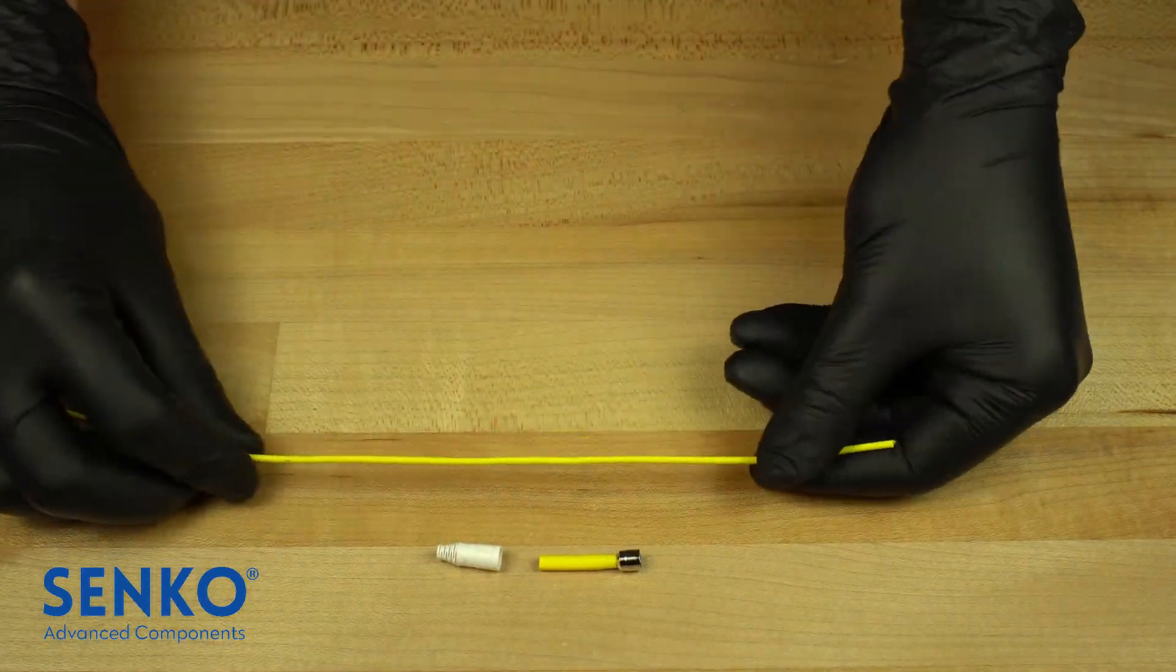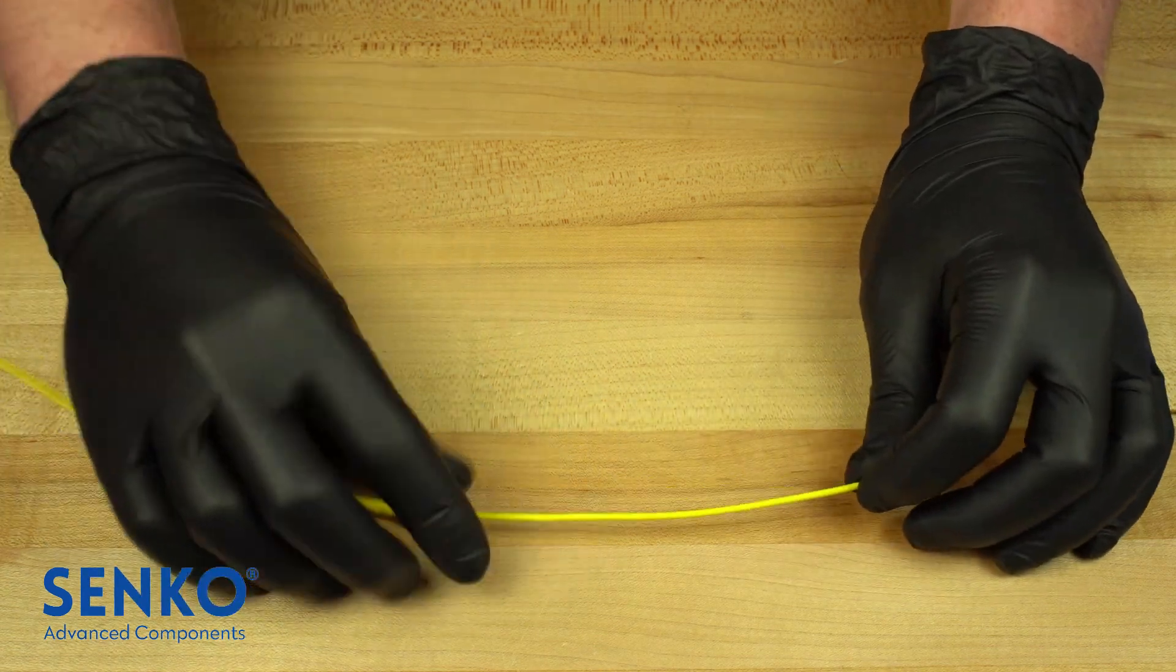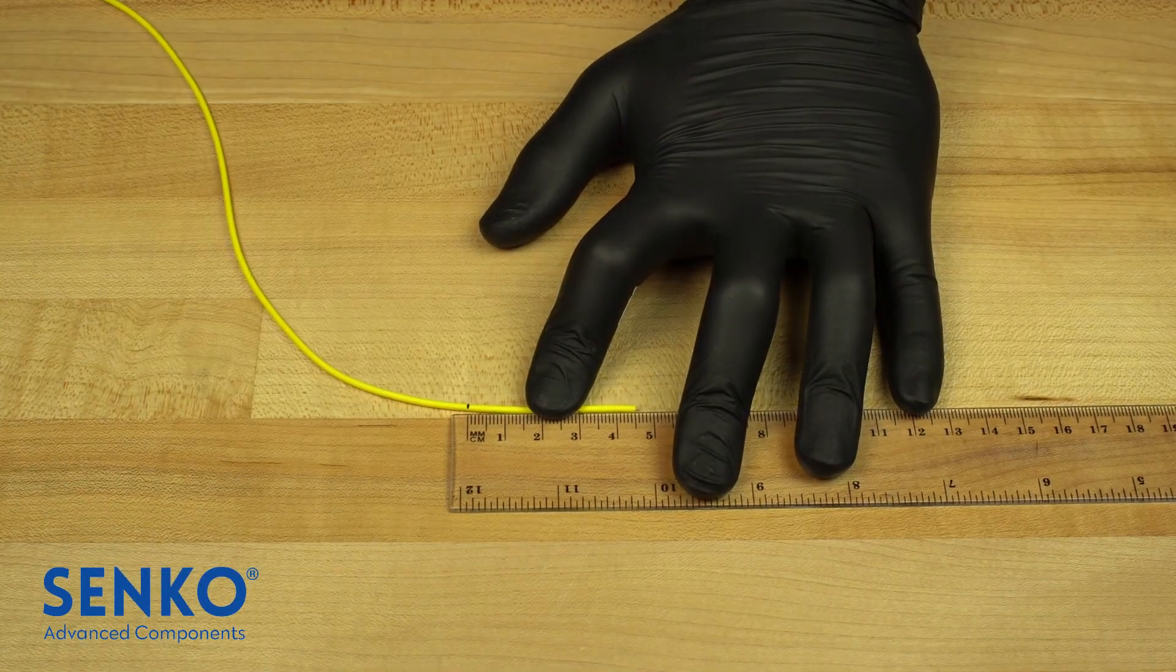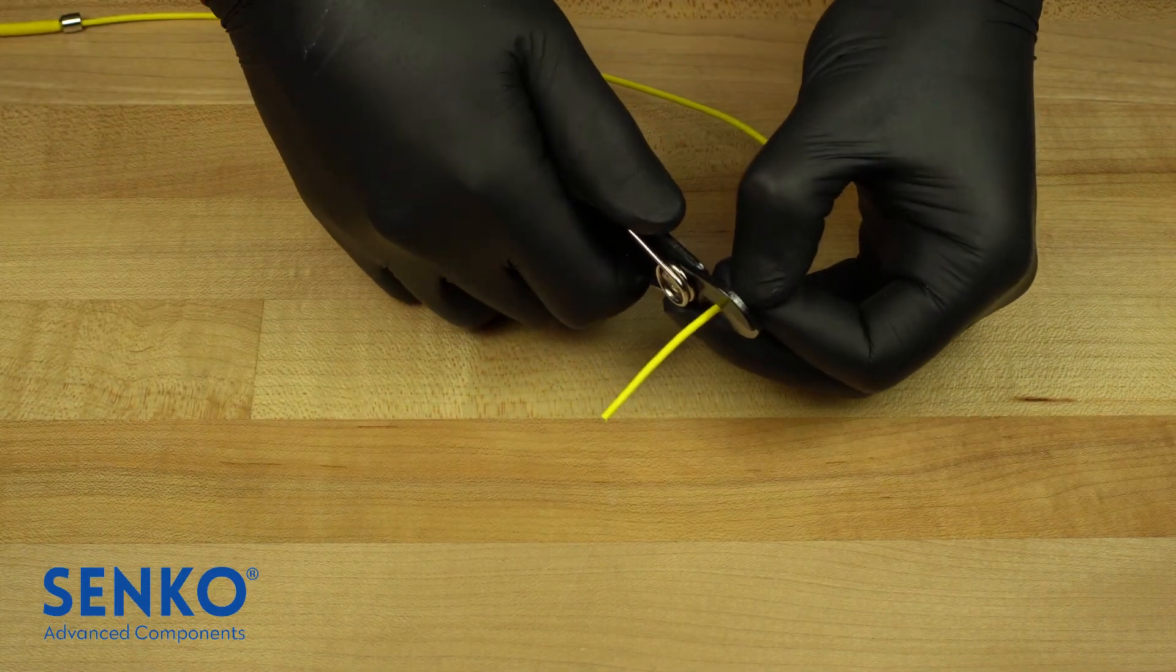To begin, install the boot and the crimp ring with heat shrink tubing onto the cable as shown. Measure 45mm from the end of the cable and mark it. Strip the 45mm of cable jacket from the fibers.